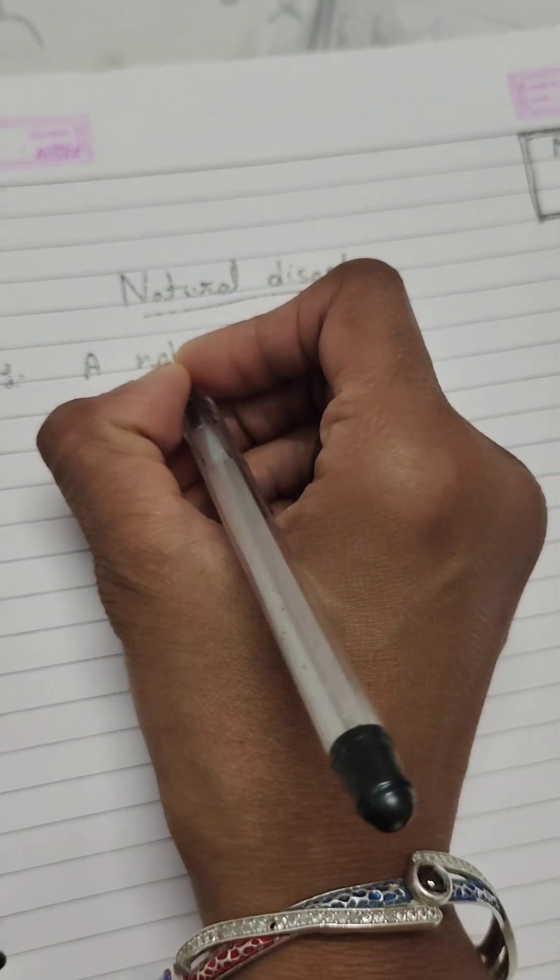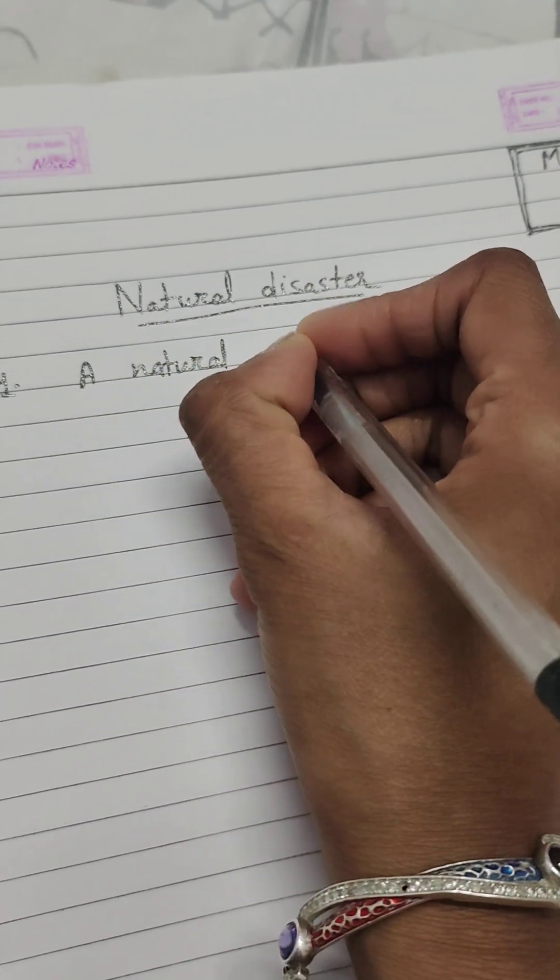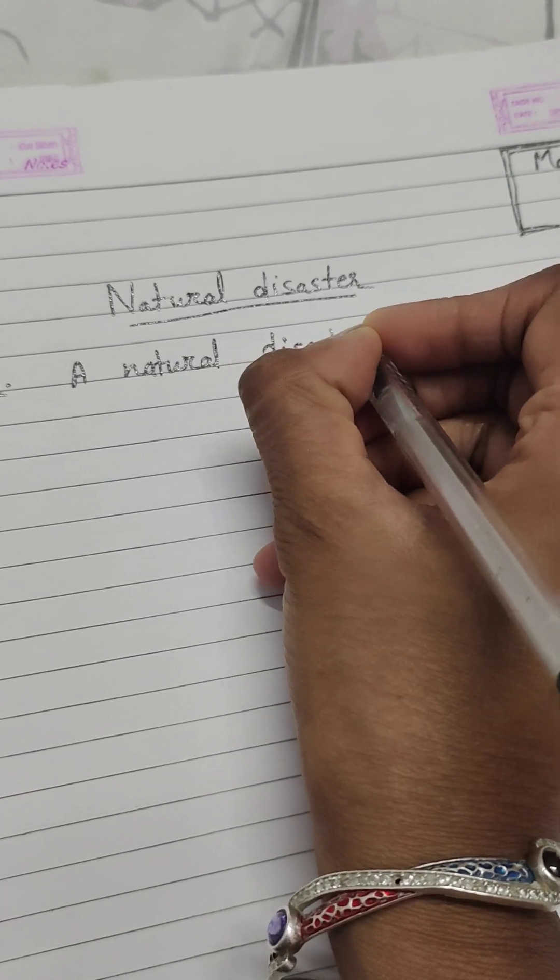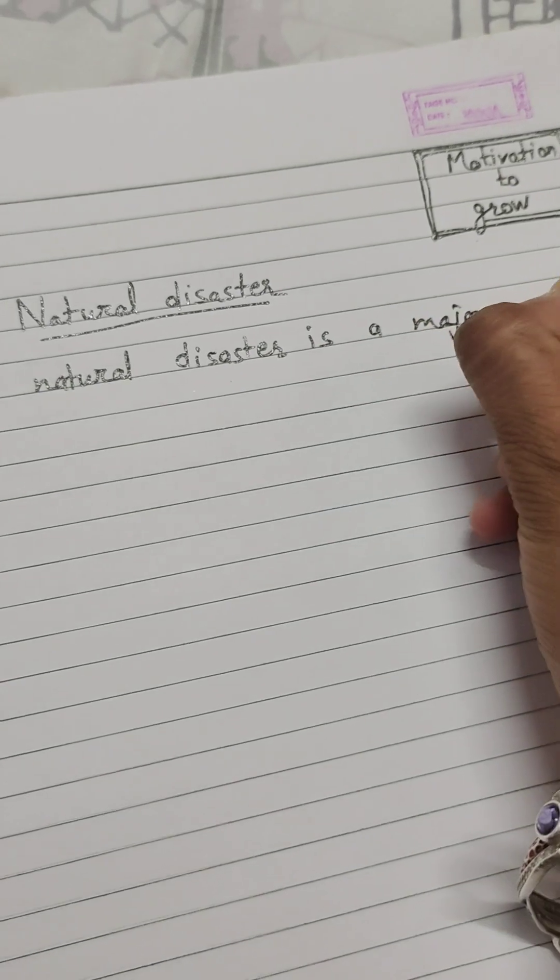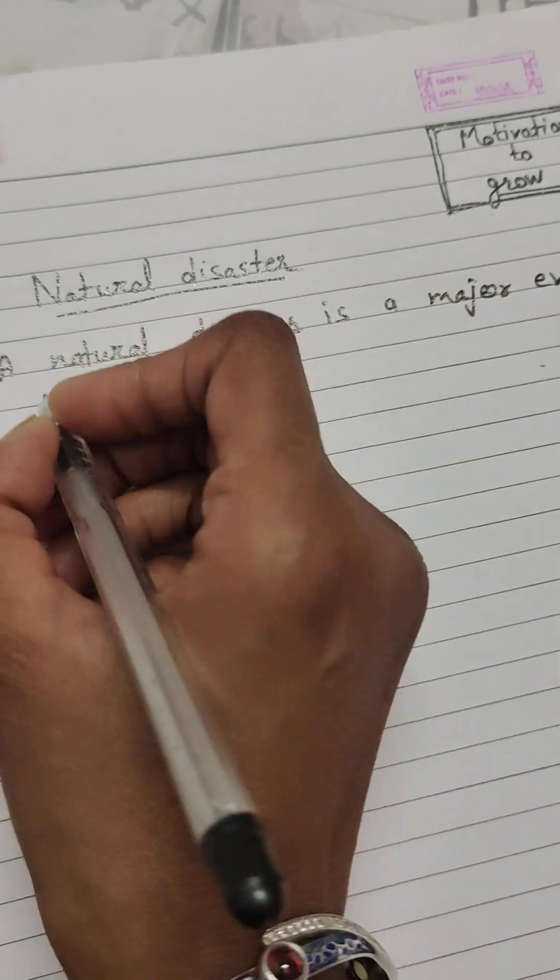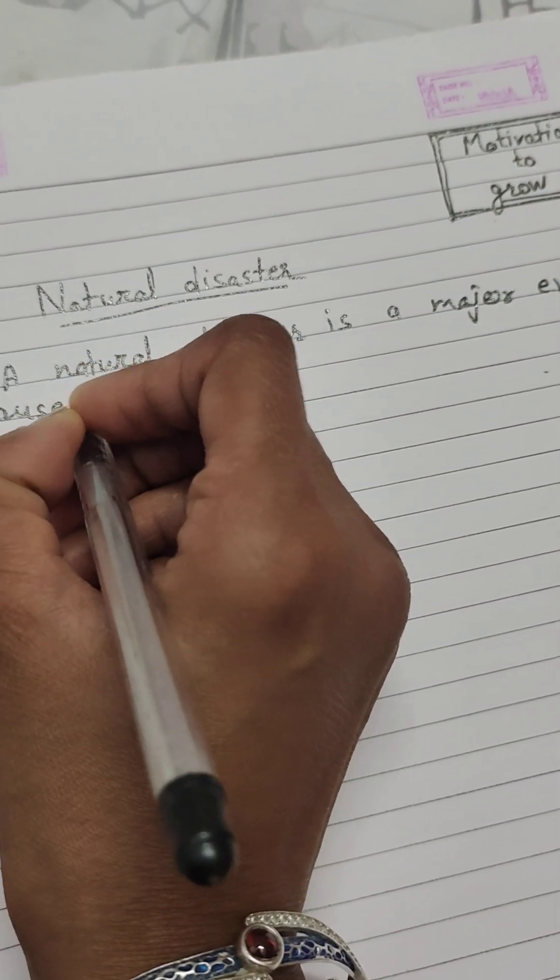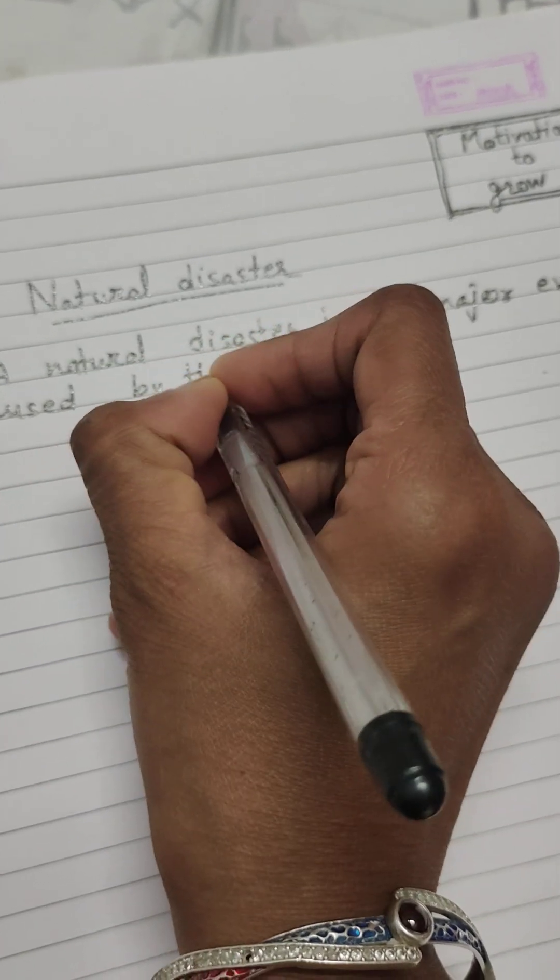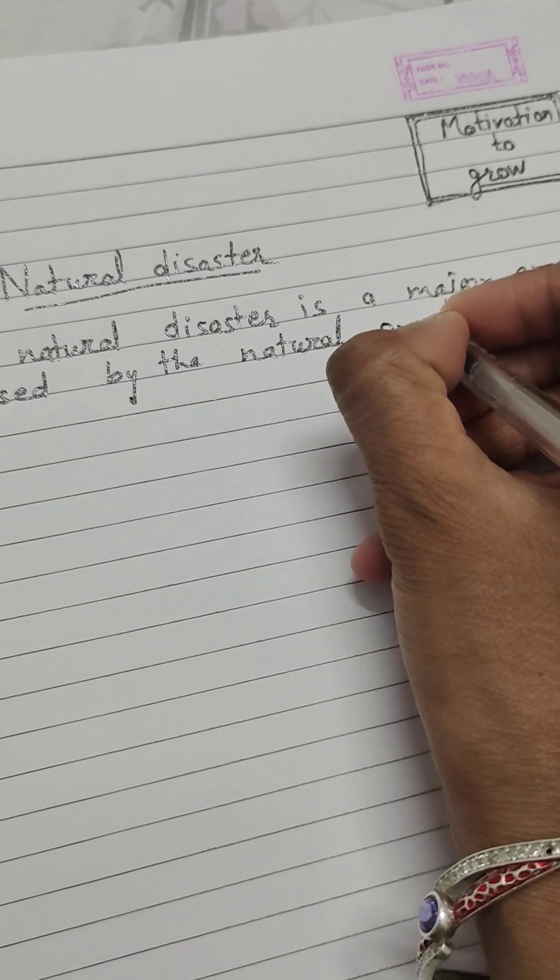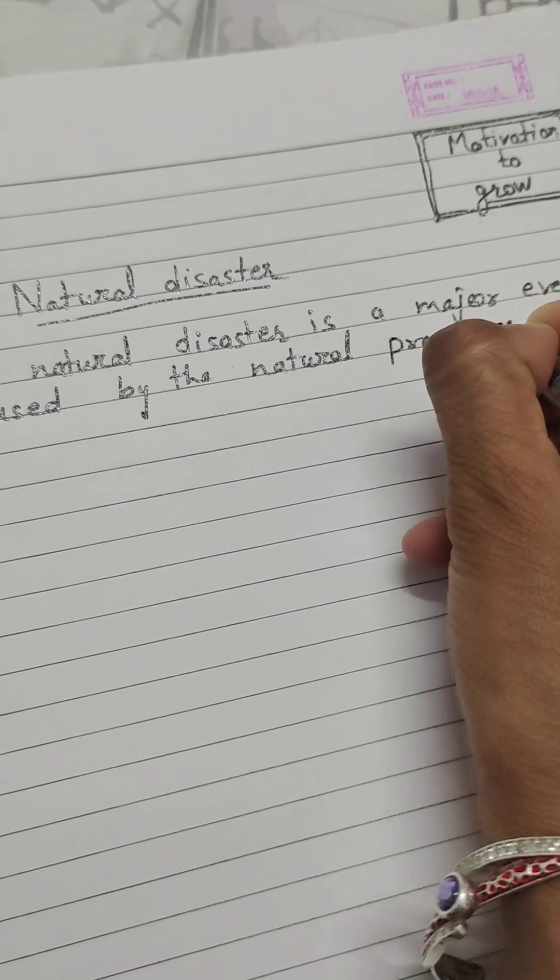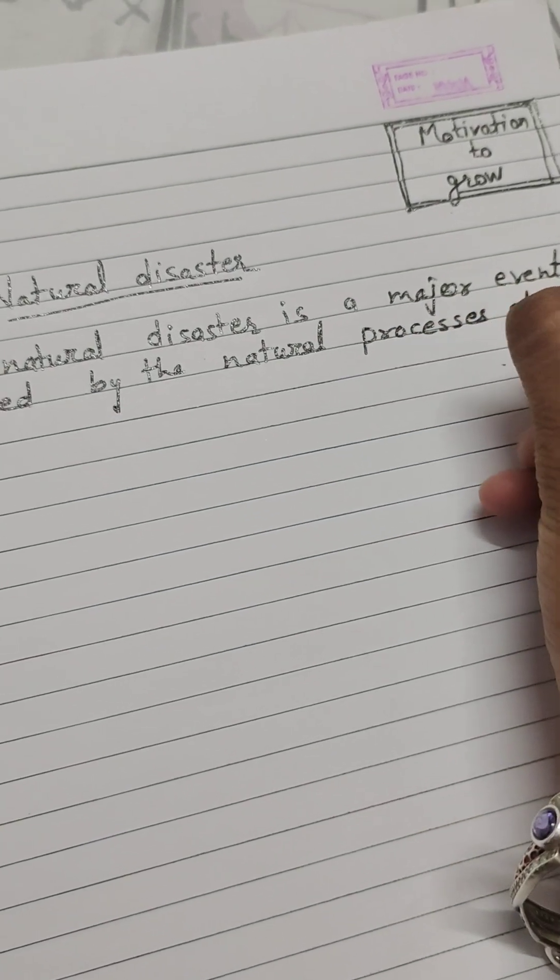A natural disaster is a major event caused by the natural processes of the earth.